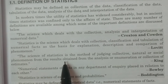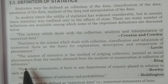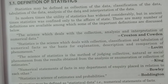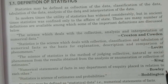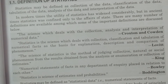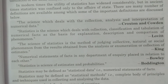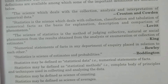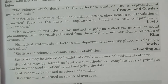Another definition: the science of statistics is the method of judging collective natural or social phenomena from the results obtained from the analysis or enumeration or collection of estimates — given by King. Another statement by Baule: numerical statements of facts in any department of inquiry placed in relation to each other. Boddington stated: statistics is the science of estimates and probabilities. Statistics may also be defined as numerical facts, as the science of counting, or as the science of averages.